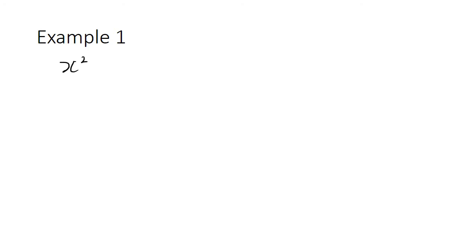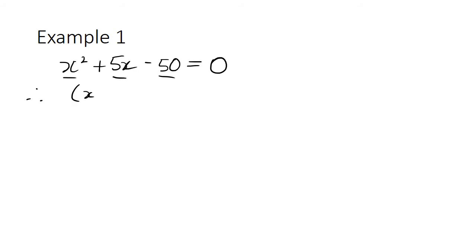So let's go through some examples. The first one we will look at is x squared plus 5x take 50 equals 0. This is already in the required form — we've got the x squared term, the x term, and the constant term. So the next step is to factorize. We get two linear factors: x plus 10 multiplied by x take 5 equals 0.